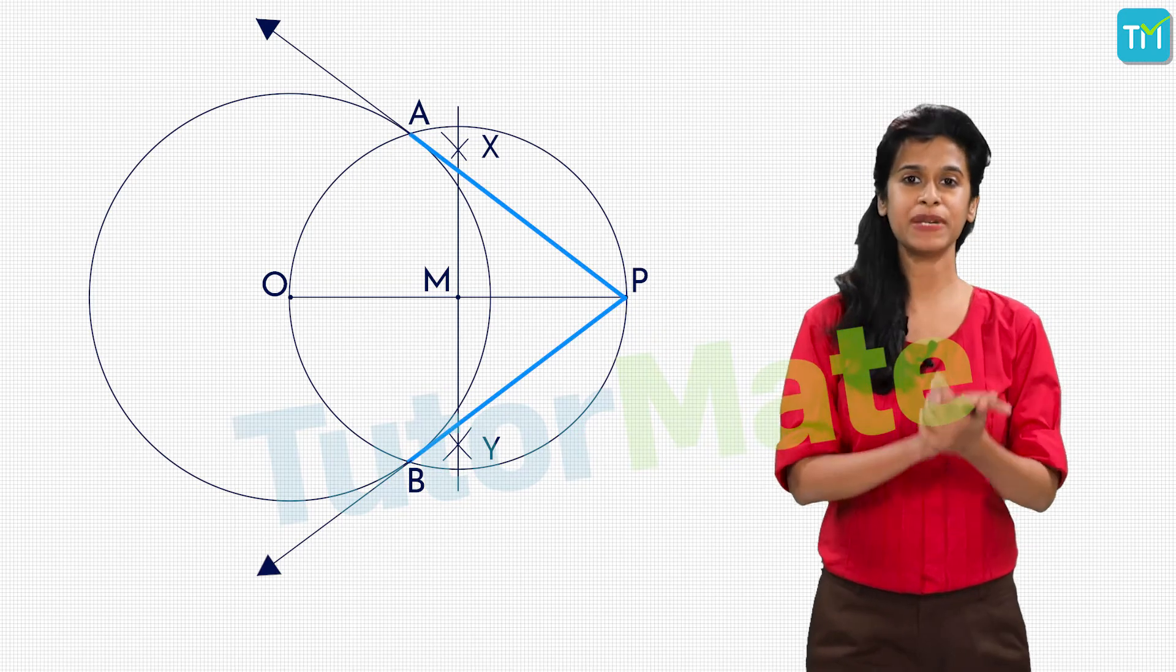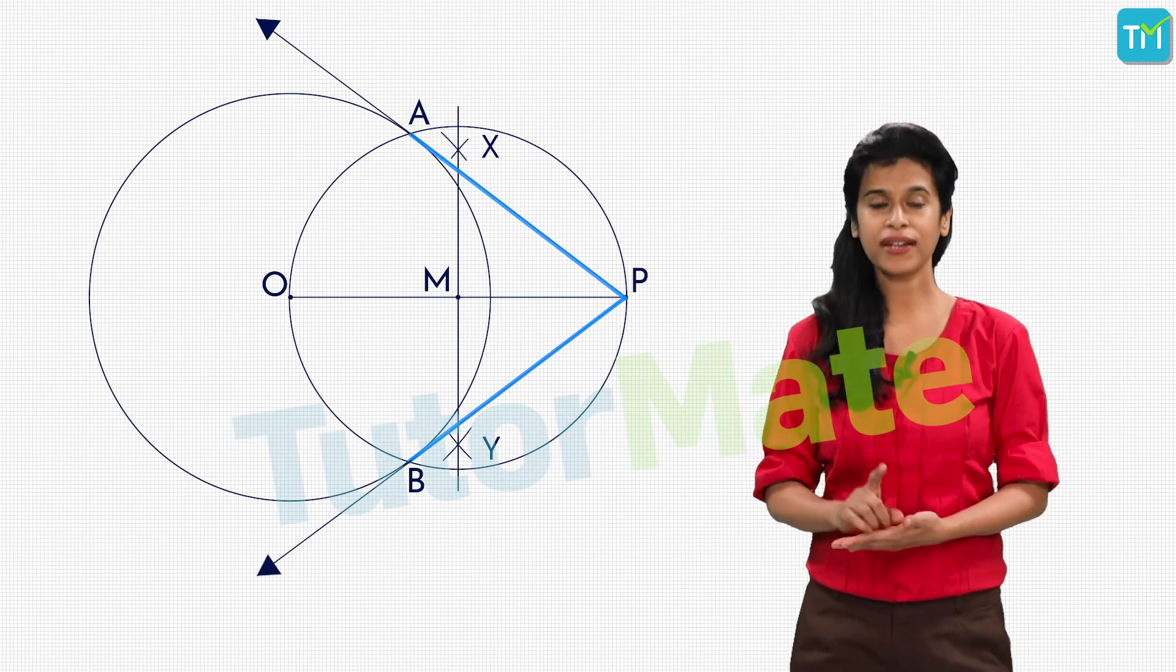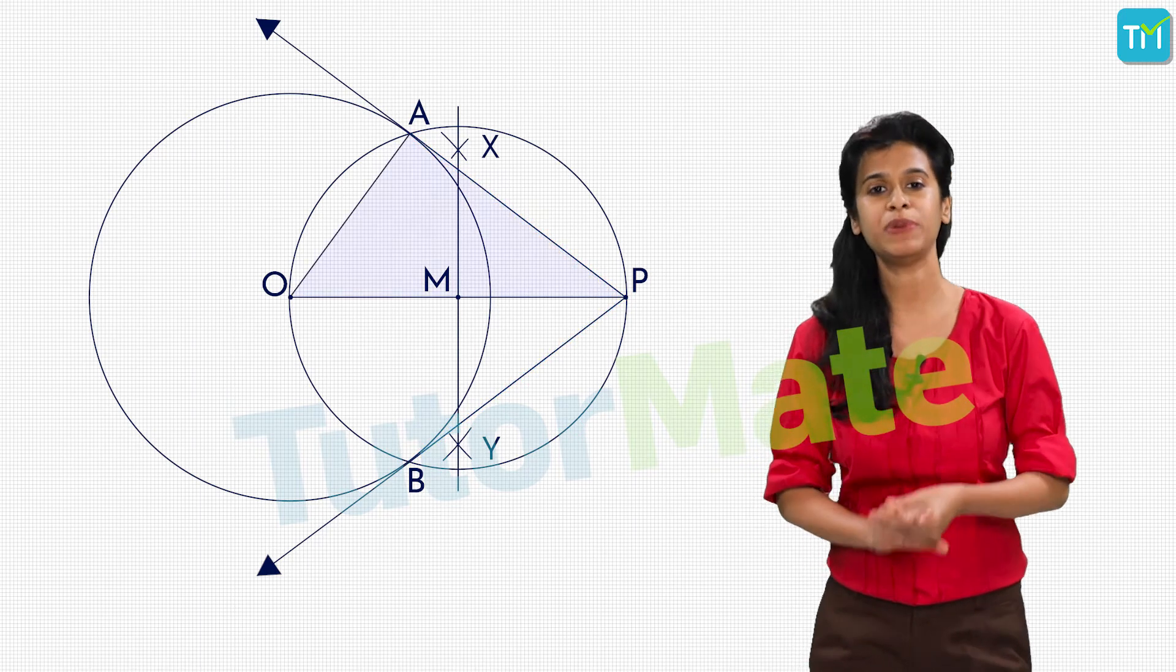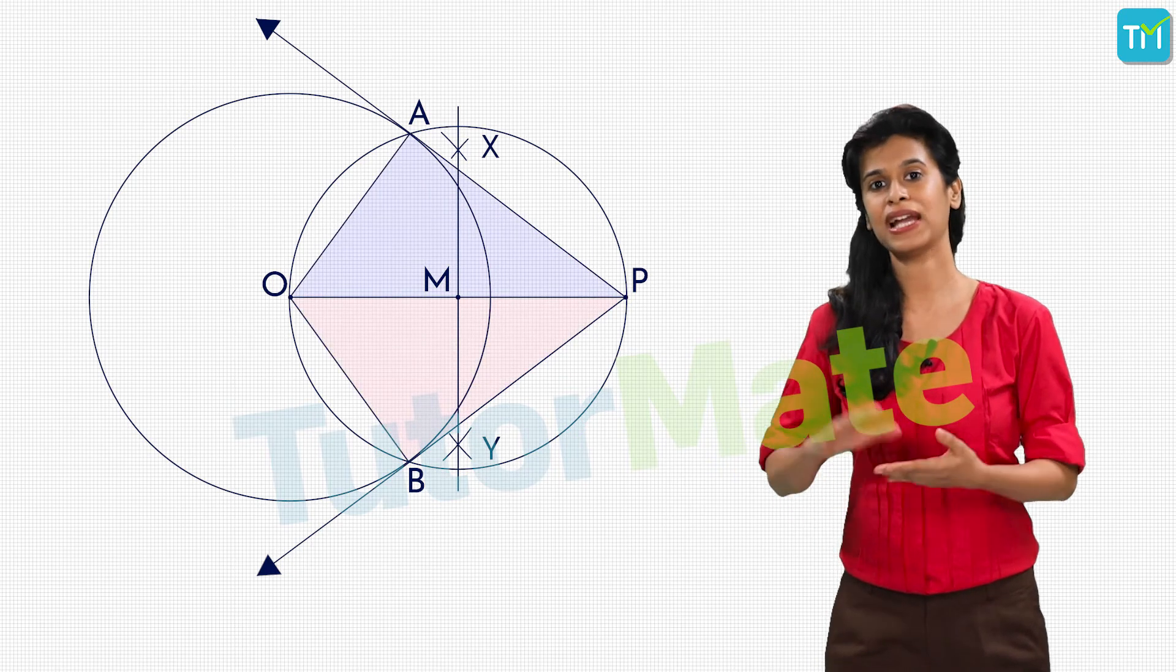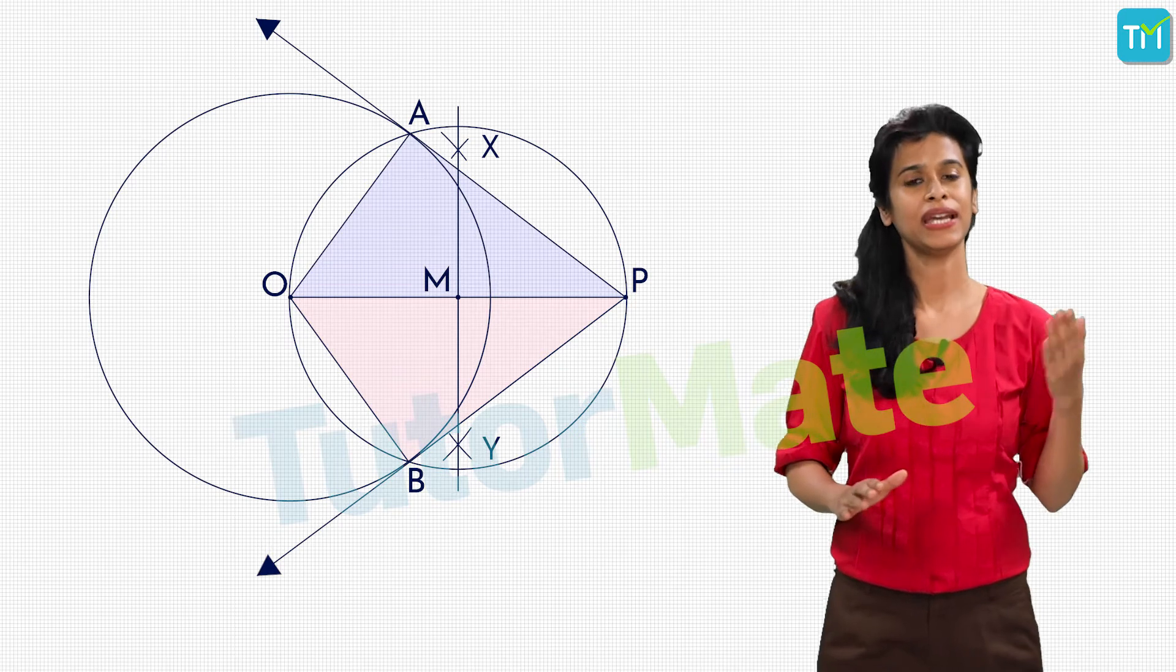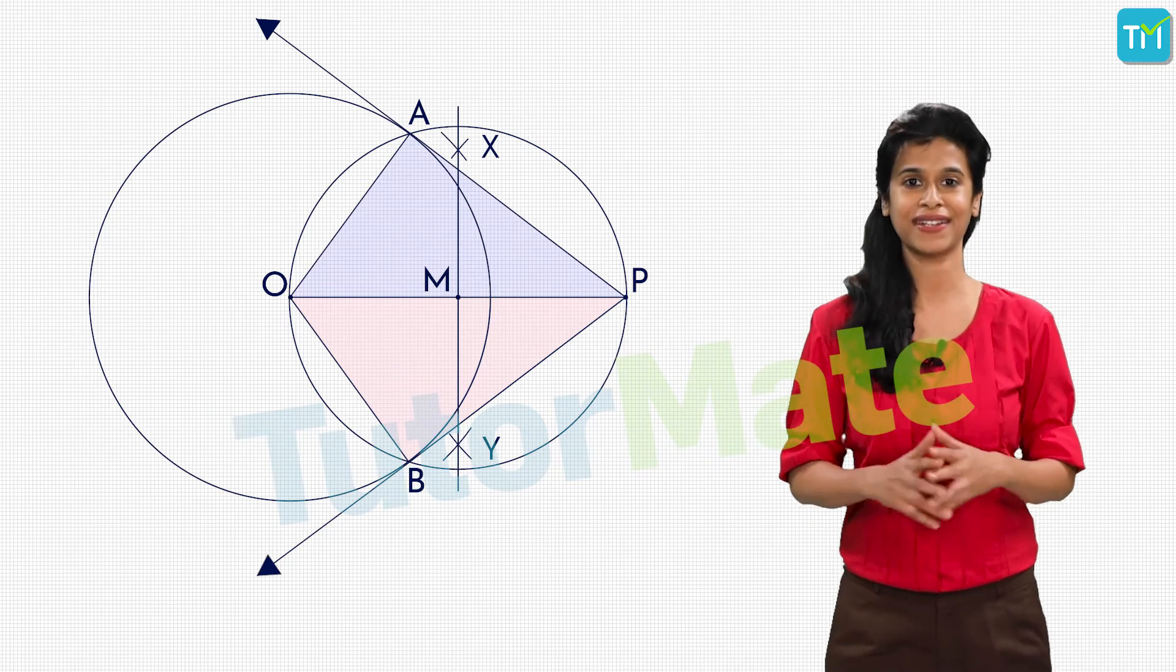Theoretically, PA and PB are tangents to the circle because triangle OAP and OBP are right angle triangles with the radius OA and OB perpendicular to AP and BP respectively. And how did we get these triangles as right angle triangles?